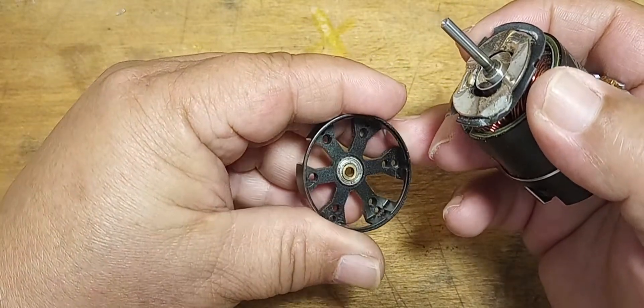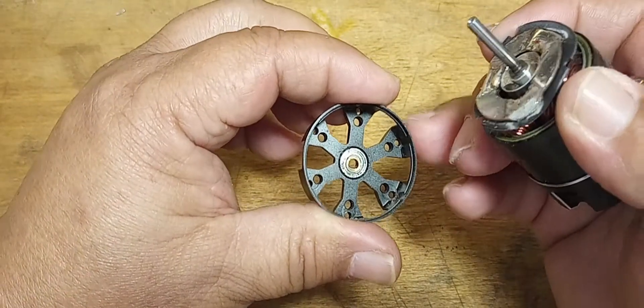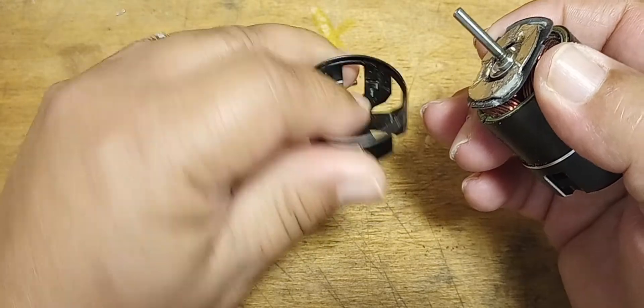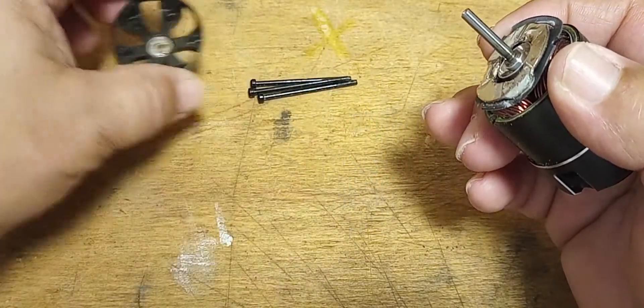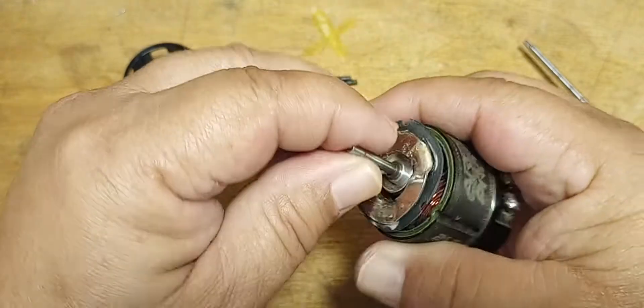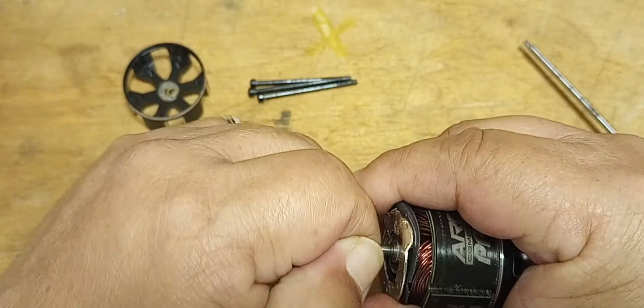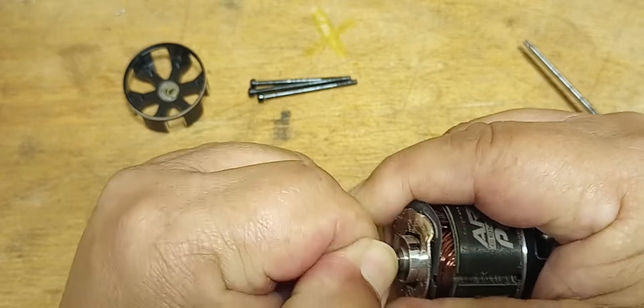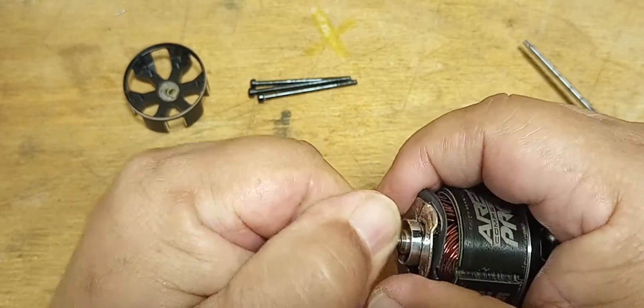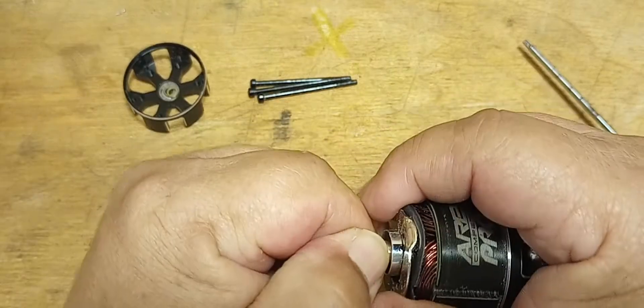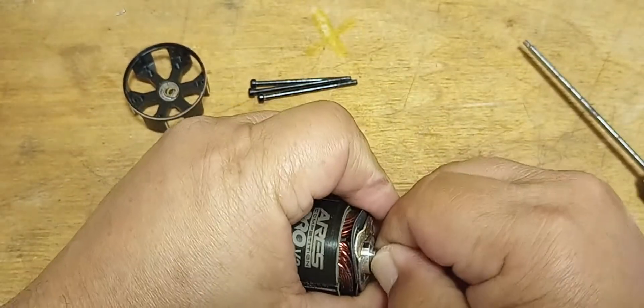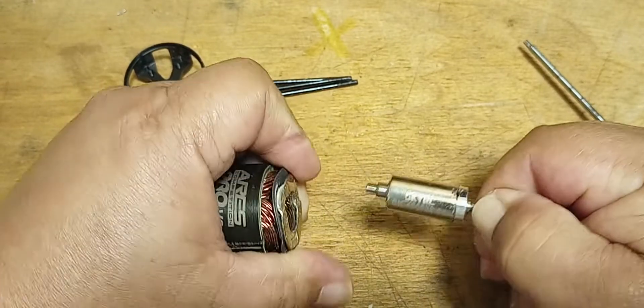Shim in there. Nice machined aluminum case. Let's pull out this rotor. Really strong magnets. I can get a hold of it. There it is.